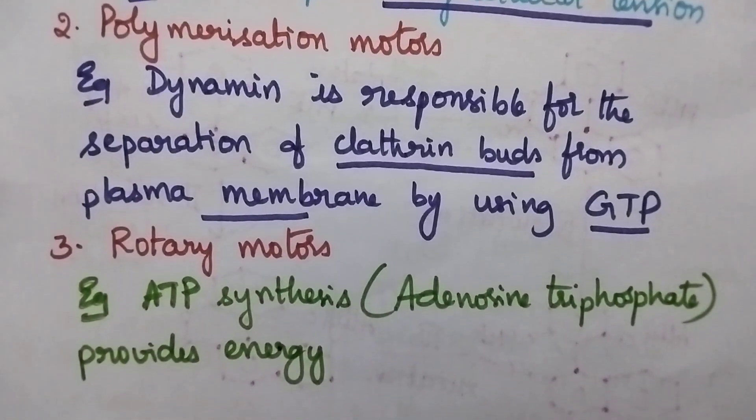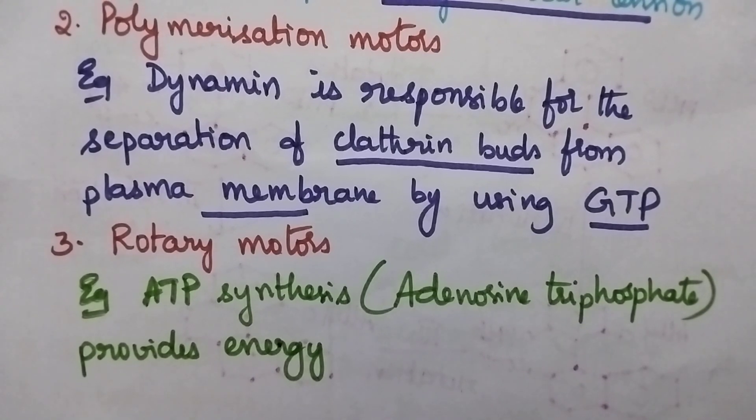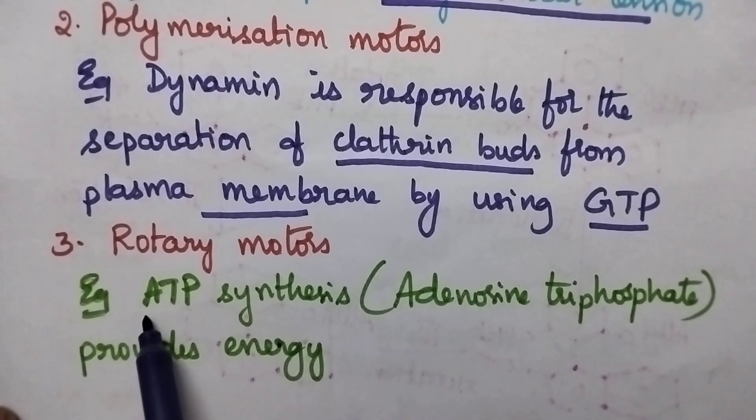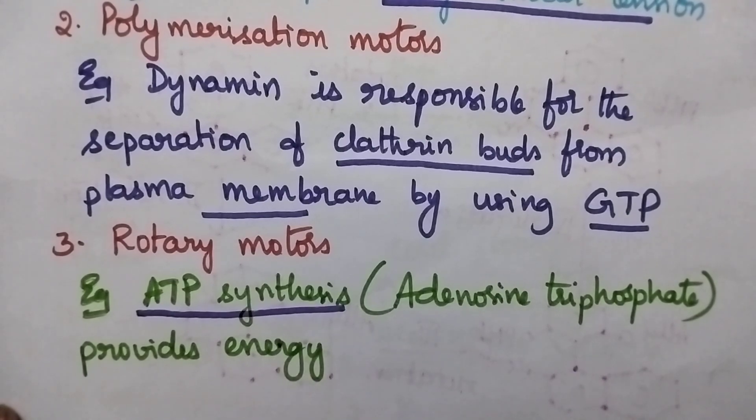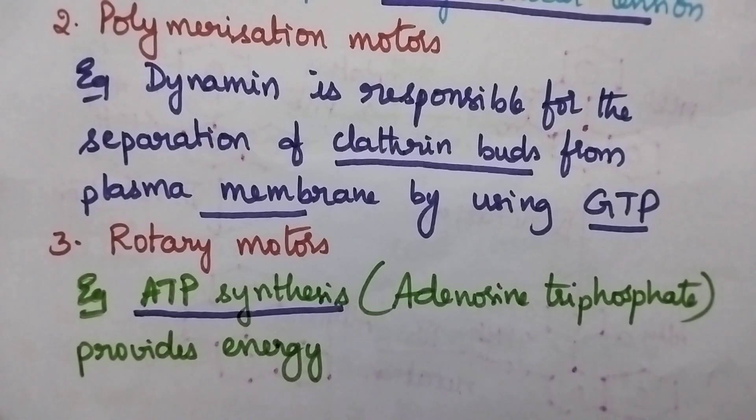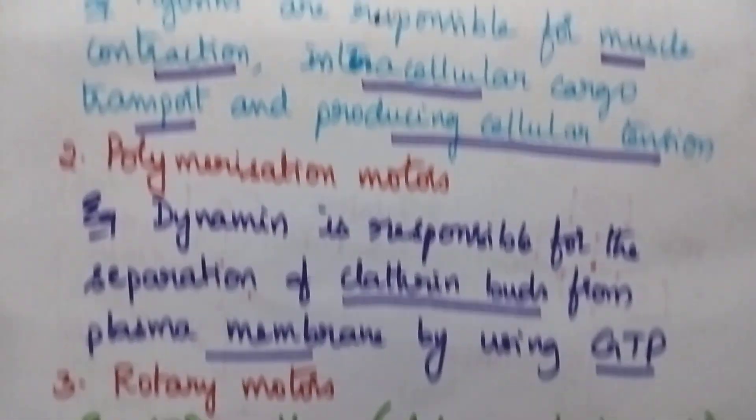Rotary motors are highly useful for the production of energy, and the best example is ATP synthase. It is highly useful for producing the energy required by the biological system.